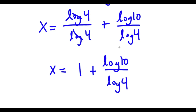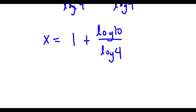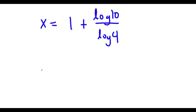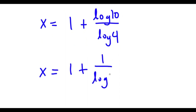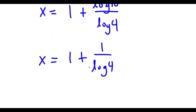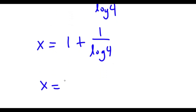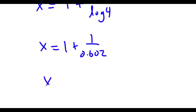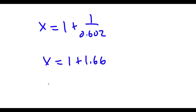Log 10 is equal to 1. So now I have x is equal to 1 plus 1 over log 4. And log 4 is equal to 0.602. So I have x is equal to 1 plus 1 over 0.602, which is equal to 1 plus 1.66, meaning x is equal to 2.66.